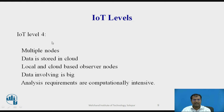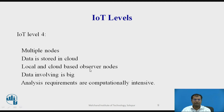Coming to IoT level 4, here multiple nodes are there. The data is stored in the cloud, and both local and cloud-based server observers are present. These nodes observe the data generated by different nodes. The data involved is big, and hence big data analytics is required. Analysis requirements are computationally intensive. Multiple nodes store the data in the cloud.